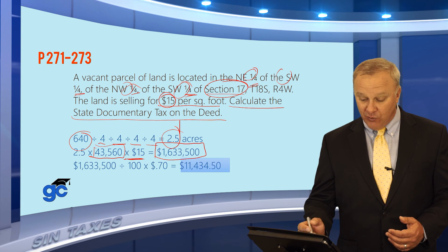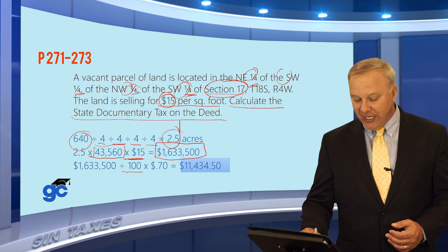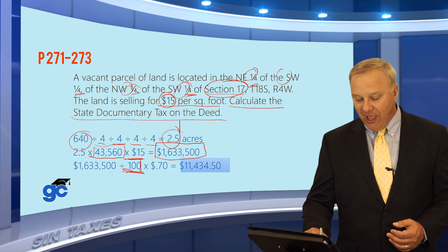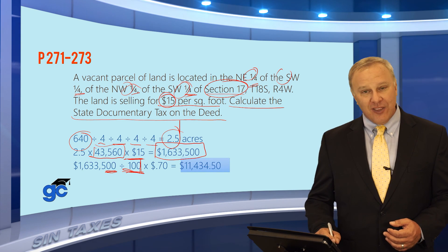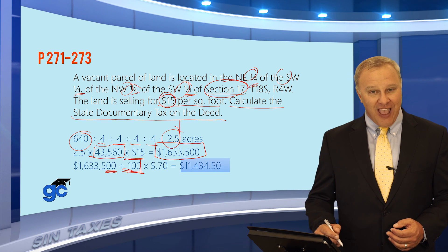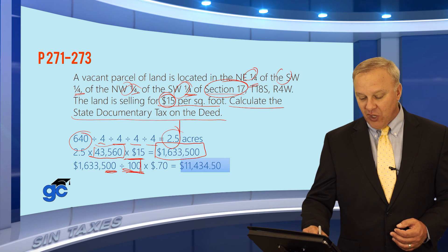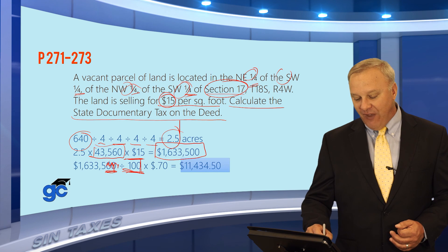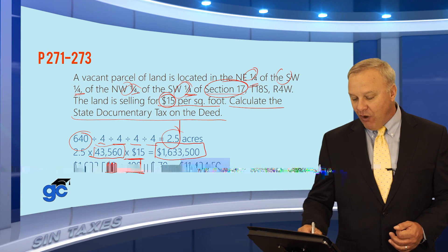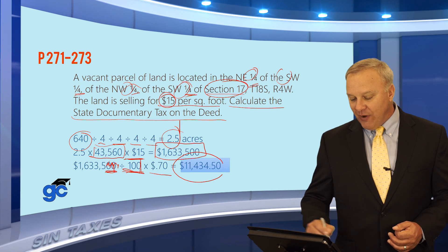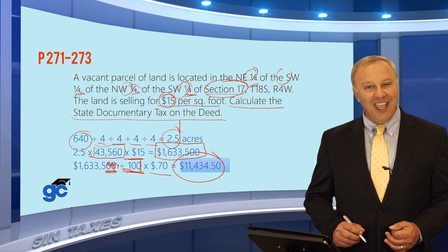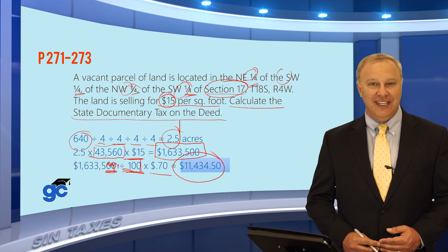Multiply that sales price: divide by 100 to find the number of units — no rounding up because these are zeros. Another way is to simply cross off the last two zeros. You end up with 16,335 times $0.70. Multiply those and your answer is $11,434.50 in doc stamp tax on the deed.